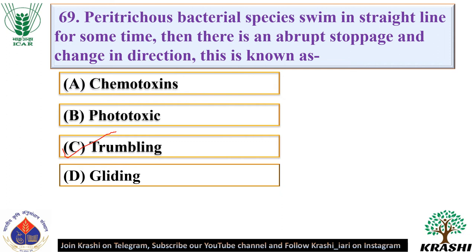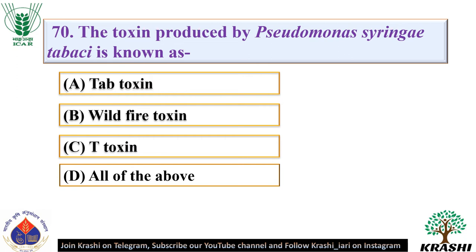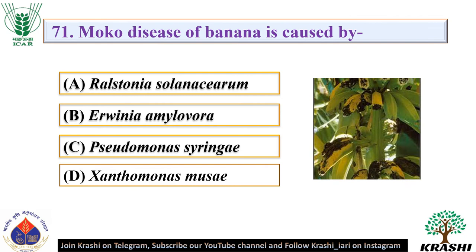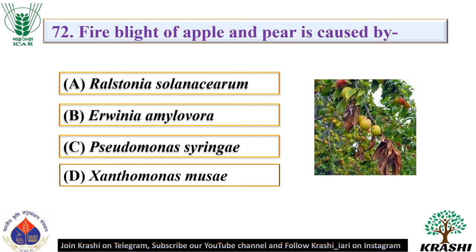Question number 70: The toxin produced by Pseudomonas syringae pv. tabaci is known as — it is known as tab toxin, wildfire toxin, or T toxin — the correct answer is all of the above. Question number 71: Moko disease of banana is caused by. The correct answer is option A — Ralstonia solanacearum. Question number 72: Fire blight of apple and pear is caused by. The correct answer is option B — Erwinia amylovora.